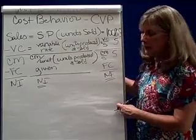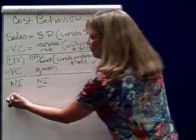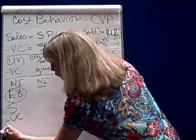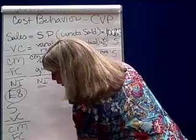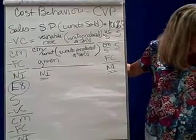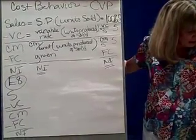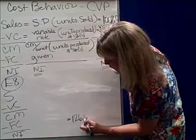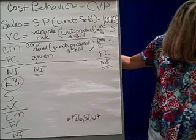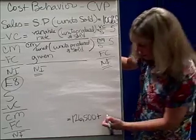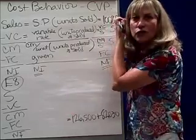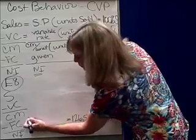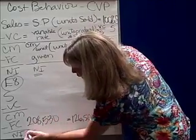Let's set up a problem and go about solving it. I'm going to use exercise 8, and we're just going to read through it and fit it into these formulas. Sales minus variable cost equals contribution margin, minus fixed cost, equals net income. The problem says the company expects to generate a profit next year. It anticipates fixed manufacturing costs of $126,500, plus fixed administrative costs of $82,030. So the total fixed cost for this company in the coming period is expected to be $208,530.